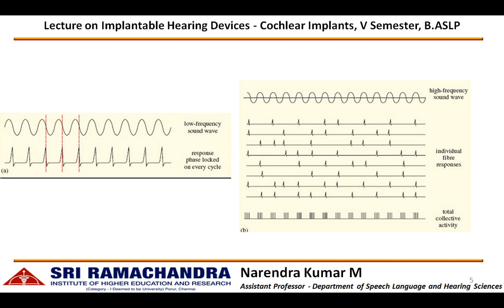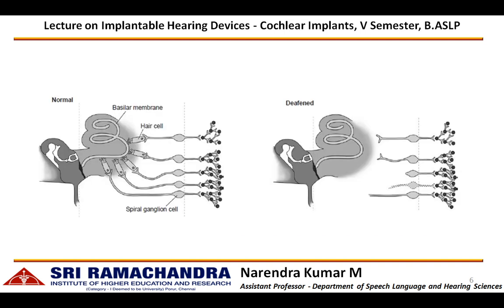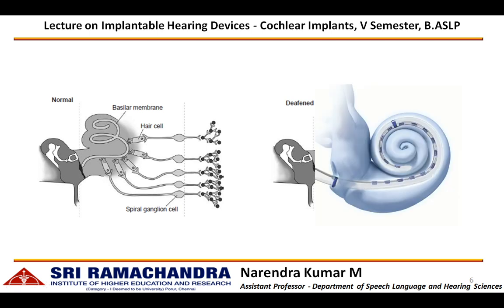The hair cells are responsible for cochlear transduction. The actual transduction of sound into electrical energy happens at the level of inner hair cells. When there is severe to profound hearing loss, these hair cells are absent or not functioning. To overcome this problem, cochlear implants are used.